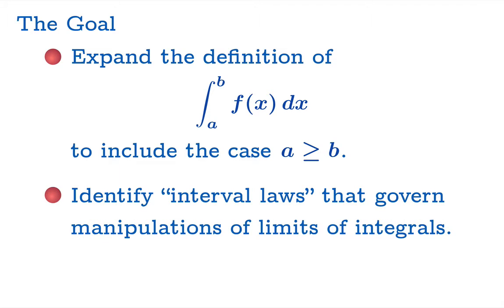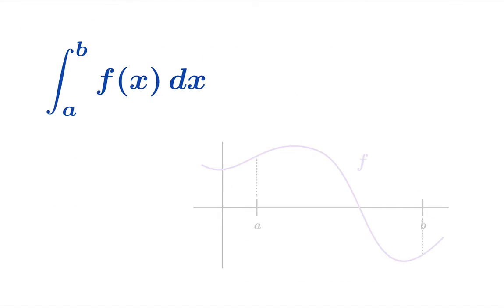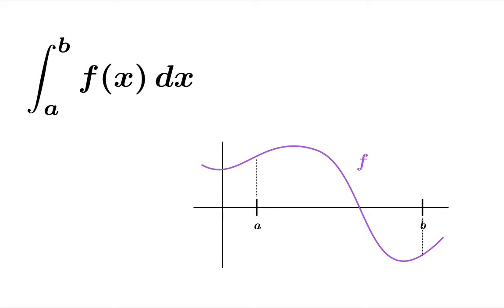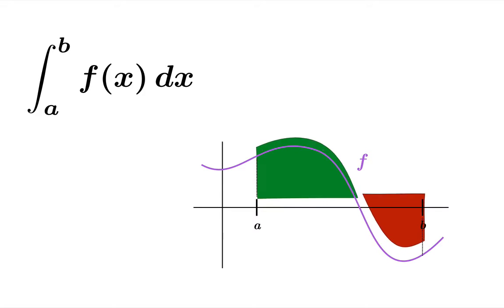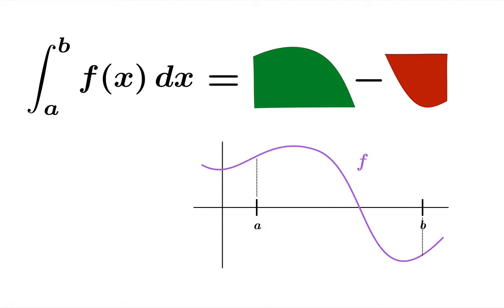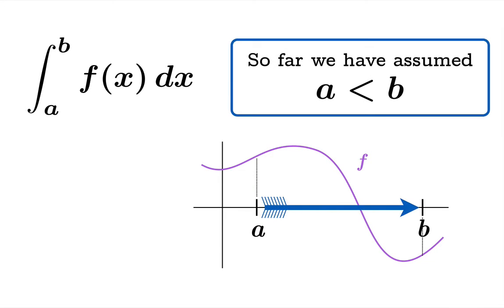We're going to identify interval laws that govern manipulations of limits of integrals, and then work through an extended example to test drive these interval laws. A quick reminder that the definite integral from A to B measures signed area — area above the horizontal axis minus area below the horizontal axis. And so far, to make sense of this, we've always assumed that A is less than B, then we build Riemann sums and take the limiting value to find the value of the definite integral.